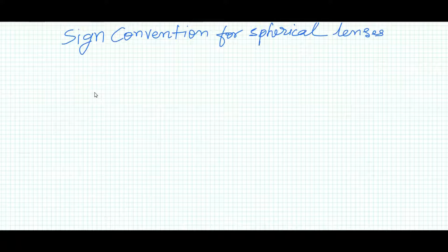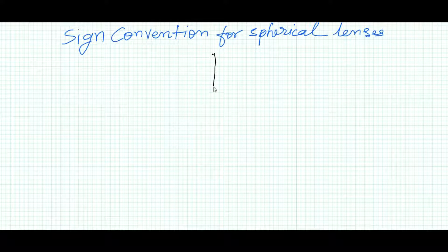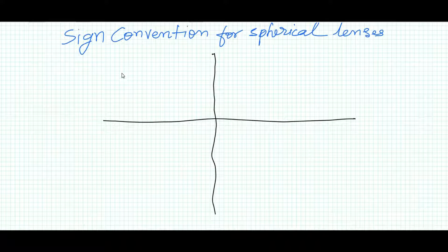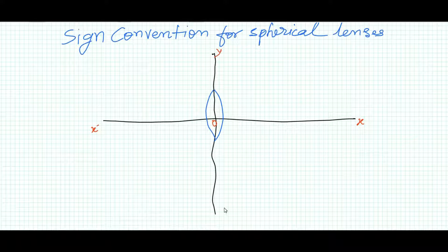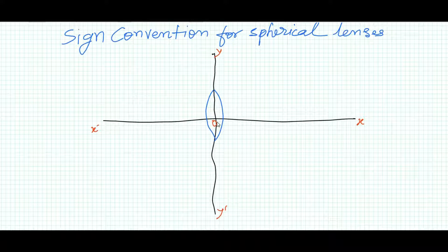In this video I will explain the sign convention for spherical lenses. We use the Cartesian coordinate system for sign convention of lenses. Suppose this is a convex lens — this is the optical center. This is the negative x-axis, this is the positive x-axis, this is the positive y-axis, and this is the negative y-axis.